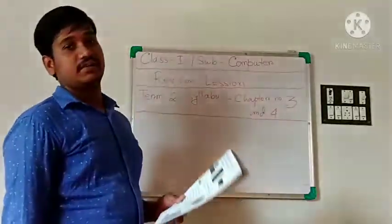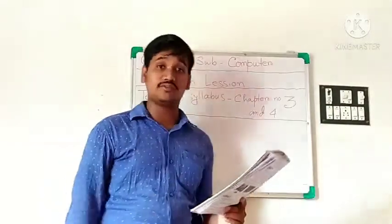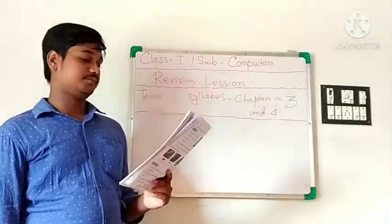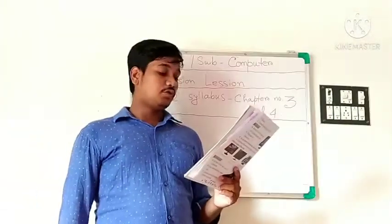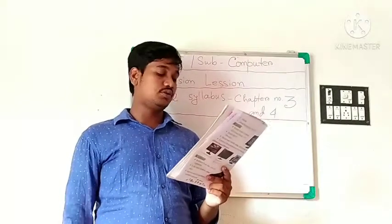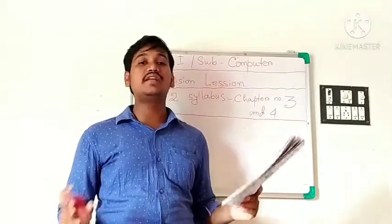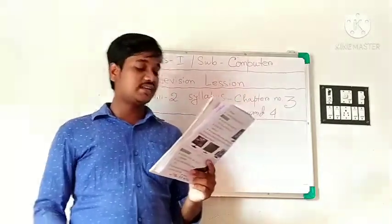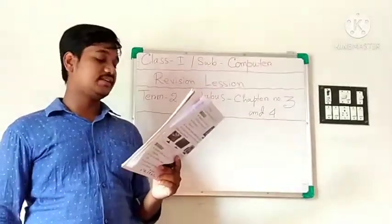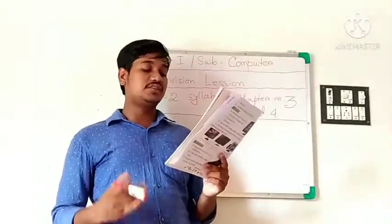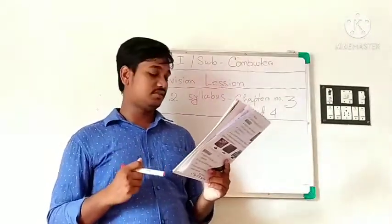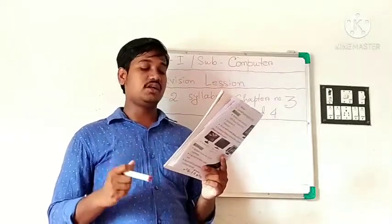Mouse: a computer mouse looks like a real mouse. It has two or three buttons. It can also be used to give instructions to the computer. The mouse pointer on the screen shows the movement of the mouse.